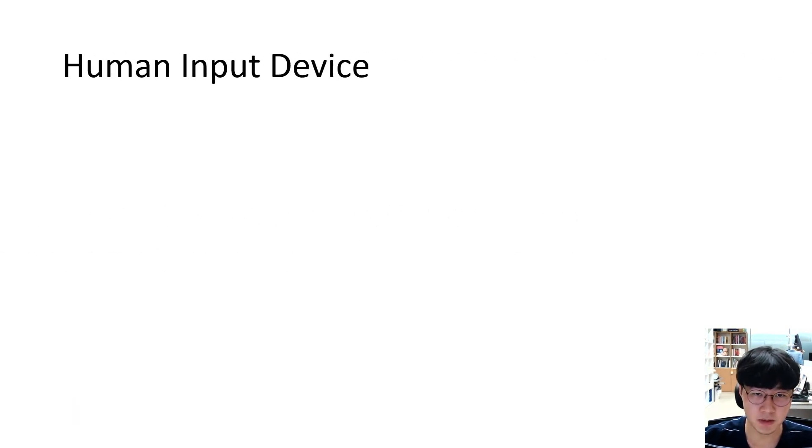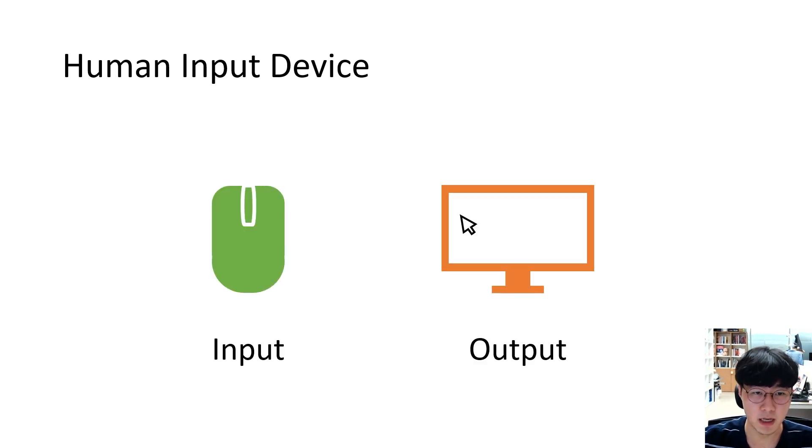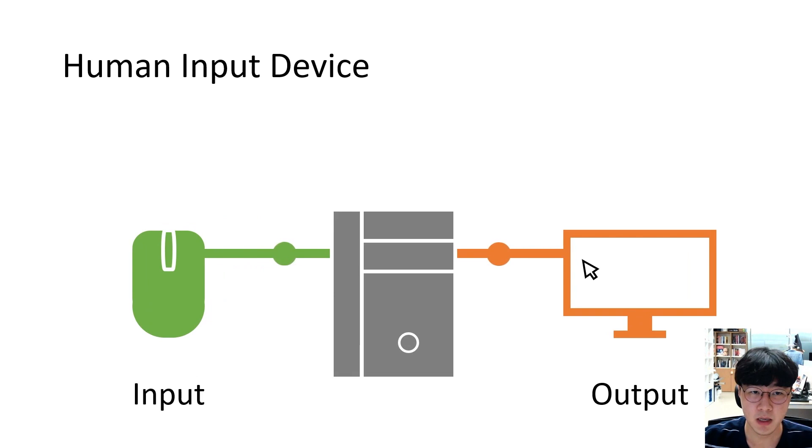Interactive systems like the peripherals we are using to watch this video can be divided into input and output devices. Input and output devices send and receive information under a specific frequency. For input devices, we call it polling rate, while for the monitor device, we call it display frequency.